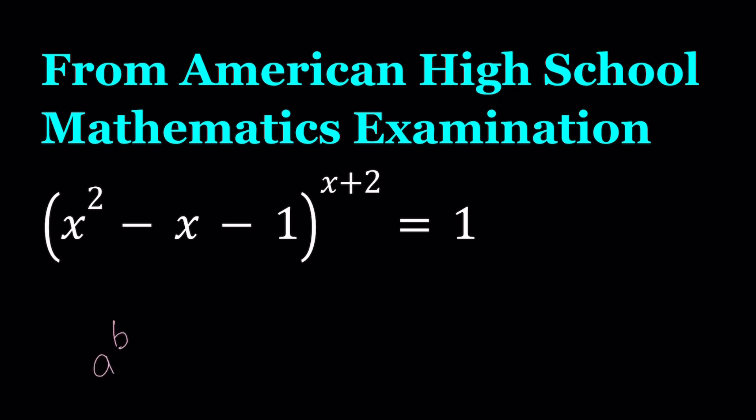So if a to the power b is equal to 1, a can be 1 and b can be any real number because 1 to the power any number is 1. Second case is a equals negative 1 and b is even because negative 1 to the power any even integer is going to be positive 1. And the third case scenario, that's why this is special. Normally, these kinds of equations are not going to produce this many cases, but with 1, it's a different scenario.